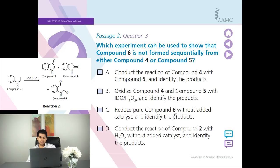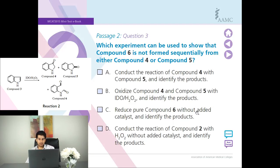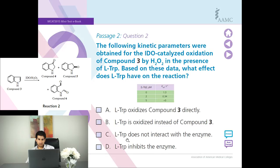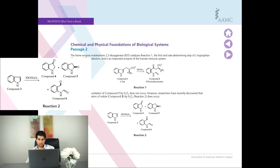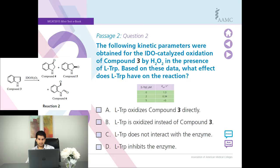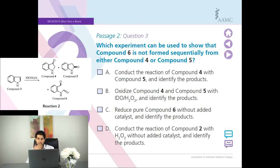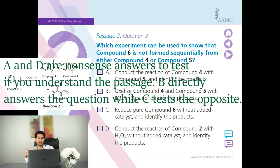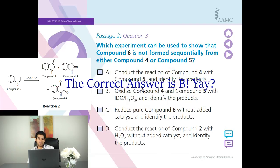Answer choice D says reduce compound 6 — I think this is trying to go backwards: instead of oxidizing compound 4 and 5, it's trying to reduce compound 6 to form compound 5 or 4. That seems a little convoluted. Answer choice B says conduct the reaction of compound 2 with H₂O₂ — compound 2 seemed pretty irrelevant, and sometimes they'll throw something in that seems irrelevant. In the exam you're not always trying to find the perfect answer — you're just trying to find what sounds right or what doesn't sound completely wrong. I don't have strong feelings for B, but the other answers sound pretty wrong, so I'm going to go with B.